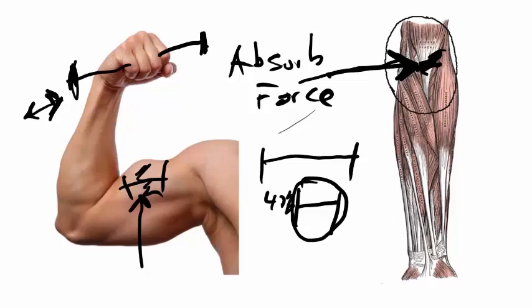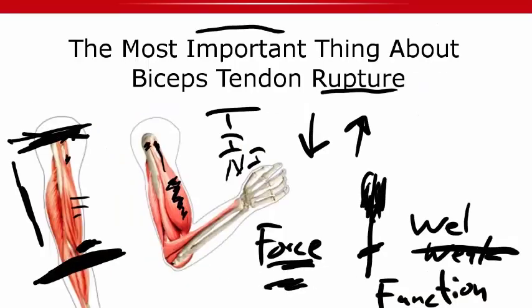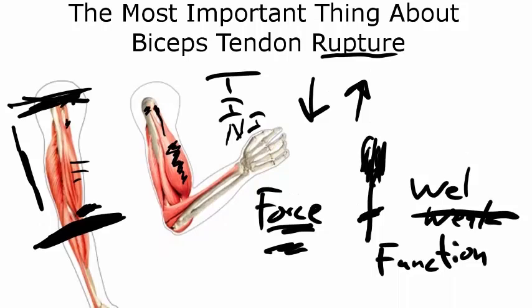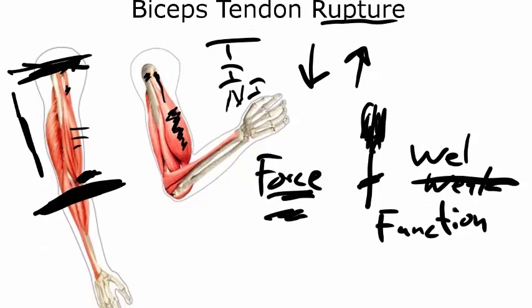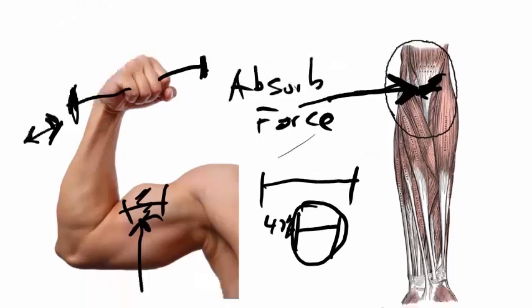So there's that. And that really is the cause of tendon rupture. It's not the activity, it's not the weight. Obviously if a car drops on you, that's going to be its own problem. But just normal use and activity and even high-level athletics, injury doesn't come generally from accident. Injury comes from muscles not working as they should.